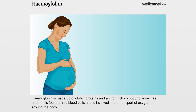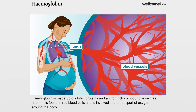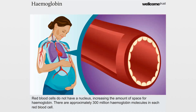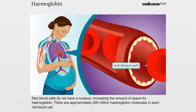Haemoglobin is made up of globin proteins and an iron-rich compound known as heme. It is found in red blood cells and is involved in the transport of oxygen around the body. Red blood cells do not have a nucleus, increasing the amount of space for haemoglobin. There are approximately 300 million haemoglobin molecules in each red blood cell.